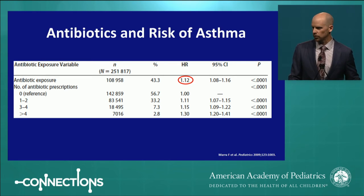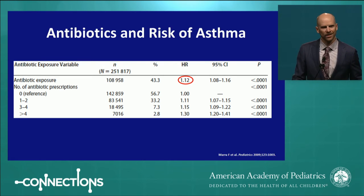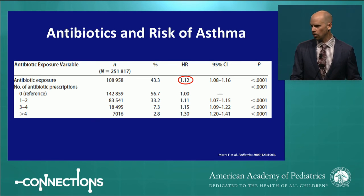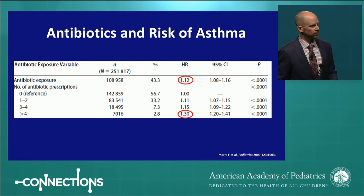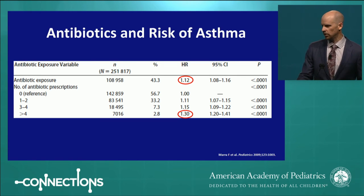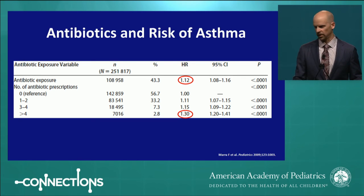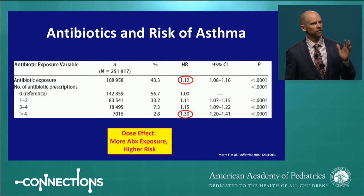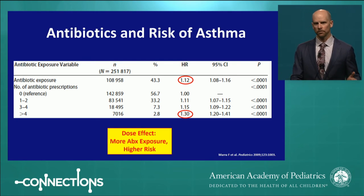The risk of developing asthma in childhood based on antibiotic exposure in the first 12 months of life: in the overall cohort, there is a 12 percent risk of asthma with any antibiotic exposure. But in children exposed to four courses of antibiotics in the first year, that risk rose to 30 percent. This is a dose effect — the more antibiotic exposure, the higher the risk — which fits with our understanding that successive courses of antibiotics impair recovery of the microbiome.